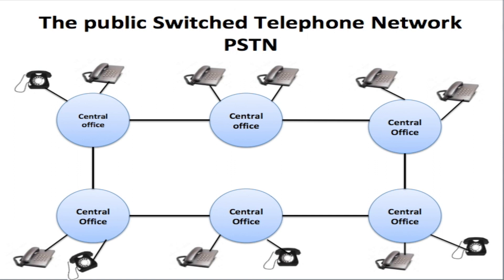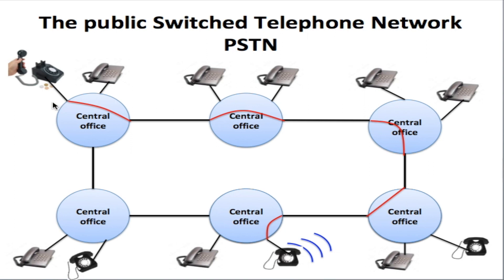Once that switch is activated, it will connect your phone line to the trunk cable. Your signal will then go through the trunk cable all the way to the second central office, where another switch will be activated connecting to the third central office. This continues through each central office until it reaches the one where the destination phone is located, and that phone will ring.